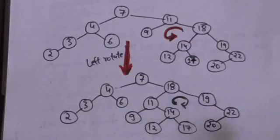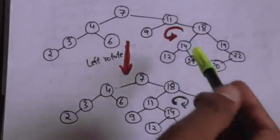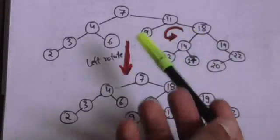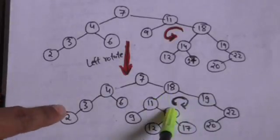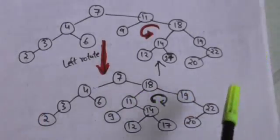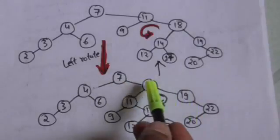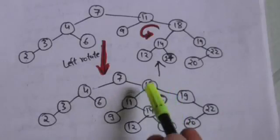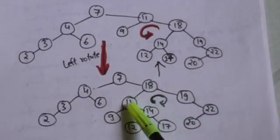After doing the left rotation on node 11, we get the resulting binary search tree. Notice that the binary search tree property is preserved — before and after the left rotation, the tree remains a valid BST. Now suppose we have to do a right rotation on node 18. When we do right rotation on node 18, its left child — node 11 — will take the place of node 18.